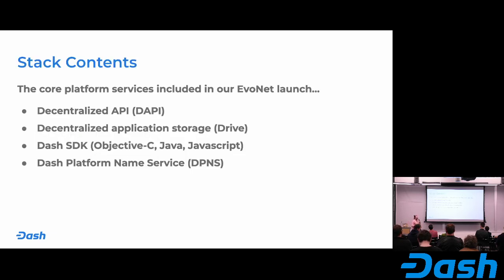When we launch EvoNet, the main contents we'll be delivering as part of Dash Platform are: DAPI, Drive (decentralized storage), the SDK — which will include a JavaScript version, Objective-C for iOS, and Java for Android — with more language versions to follow, hopefully with community help. And lastly, we'll be releasing Dash Platform Name Service, which will resolve an identity stored on the platform to a human-readable username.